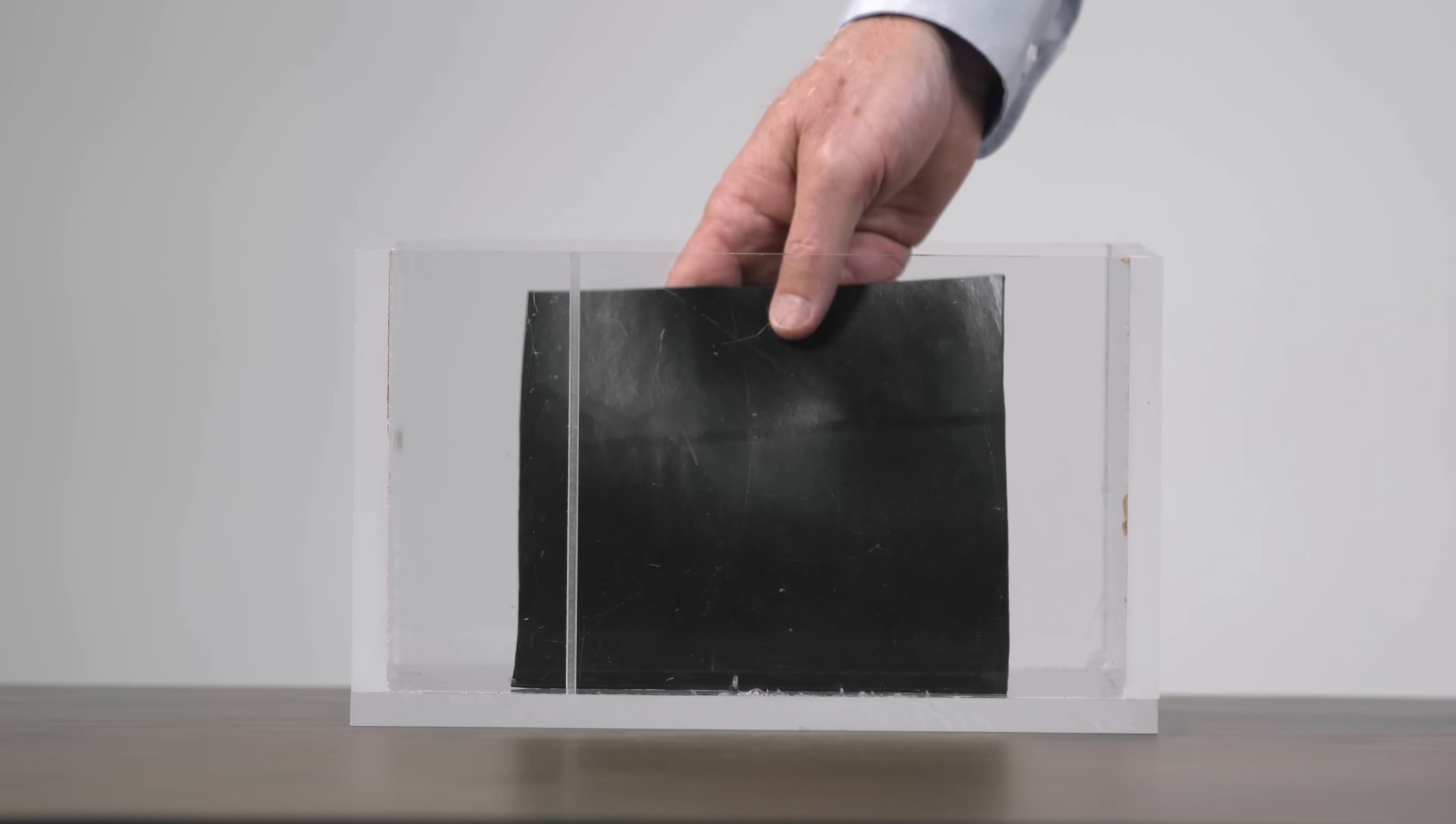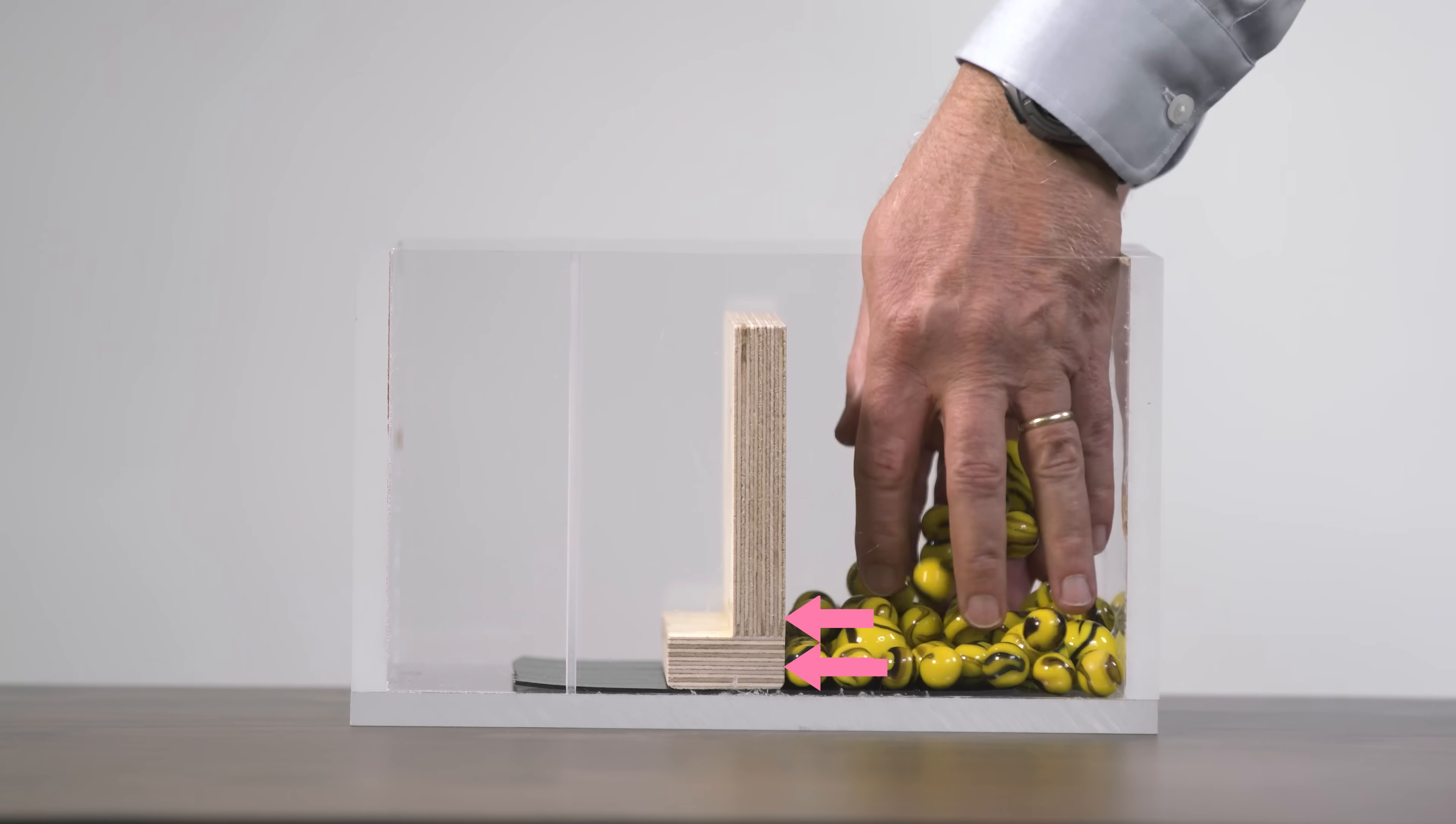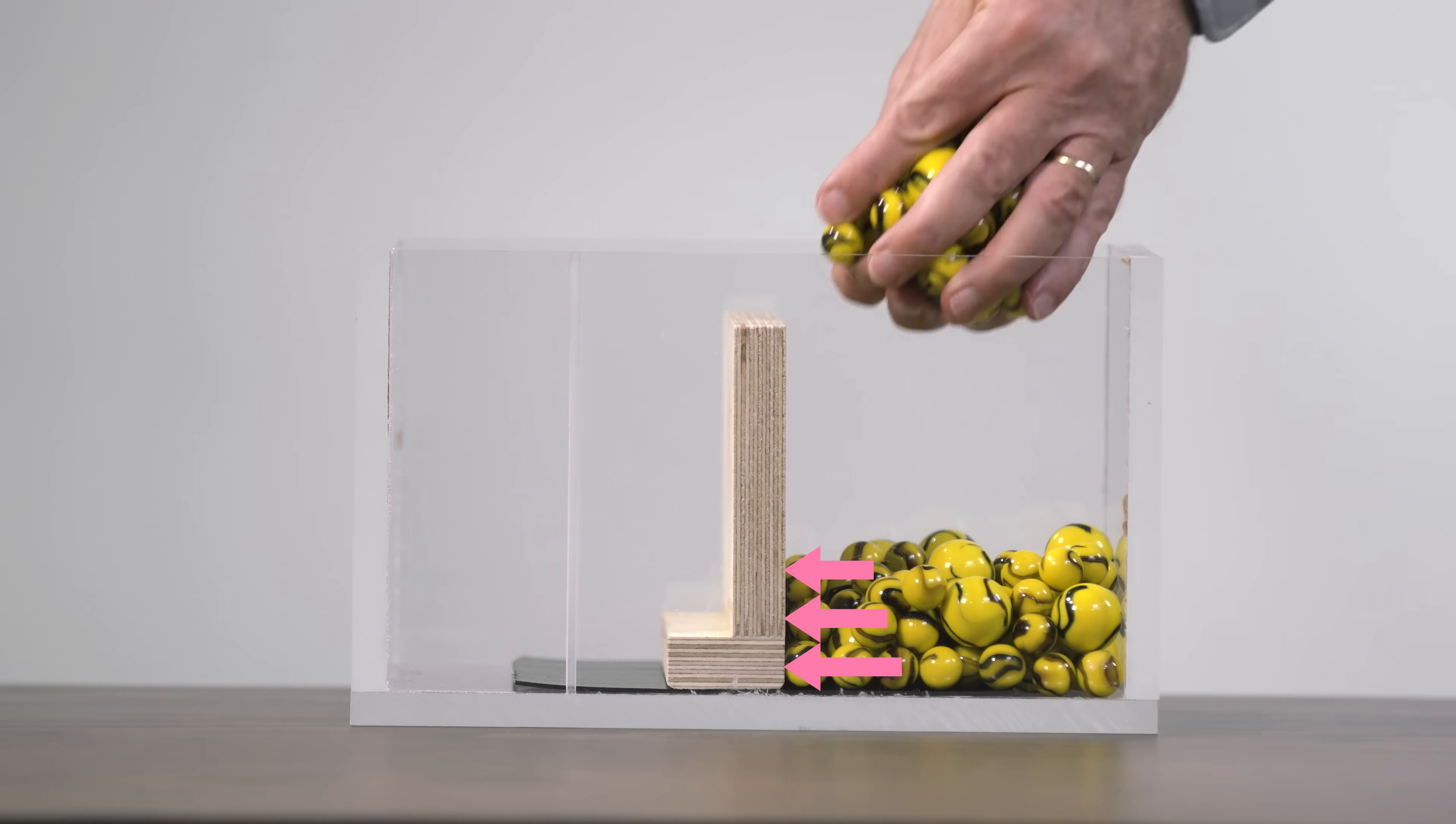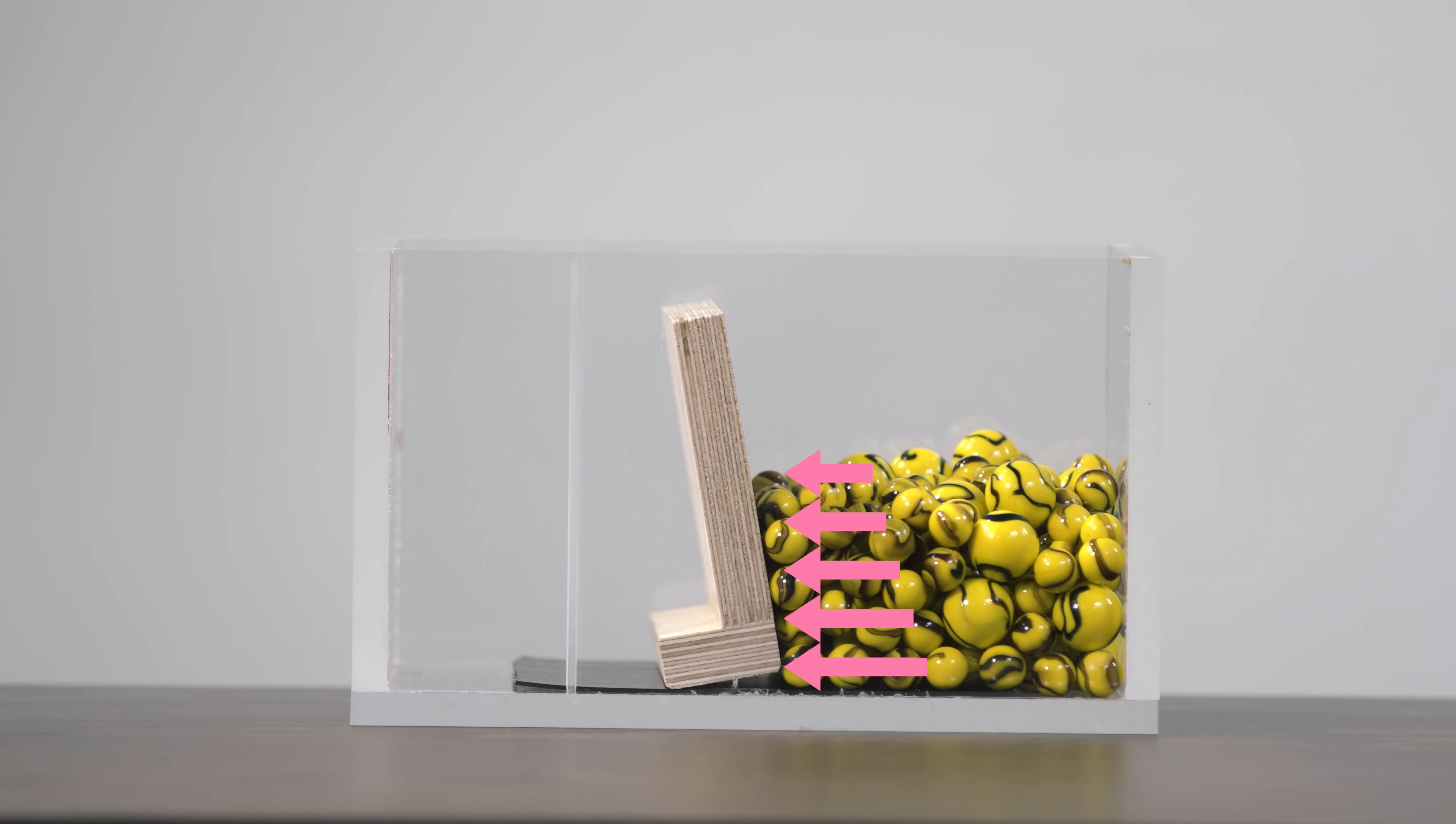In the model, we can increase the friction between the retaining wall and the base by placing a rubber mat between them. You will have to do some extra reading if you want to find out how they achieve this in the real world. As you can see, increasing the friction allows our model wall to support a noticeably greater depth of marbles. But it still eventually fails by overturning, in this case, when the depth reaches 8 cm.